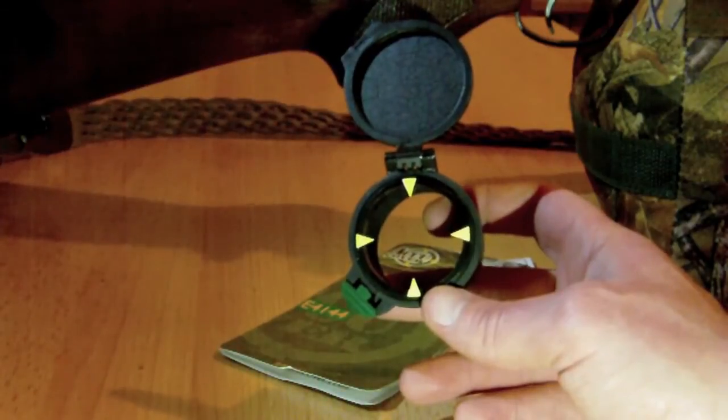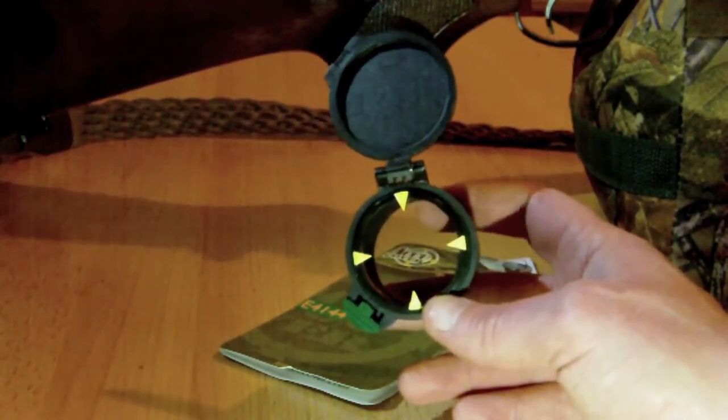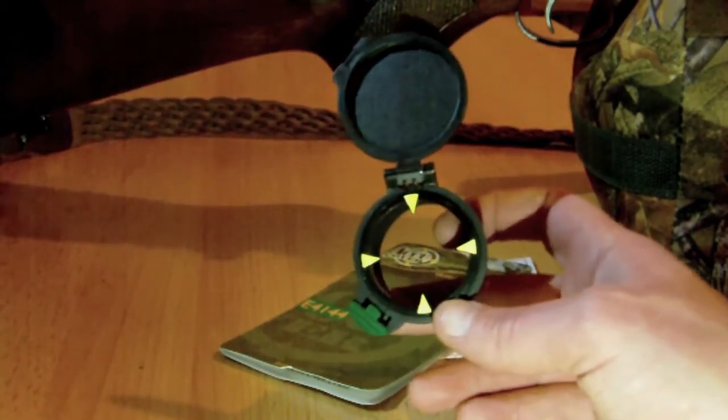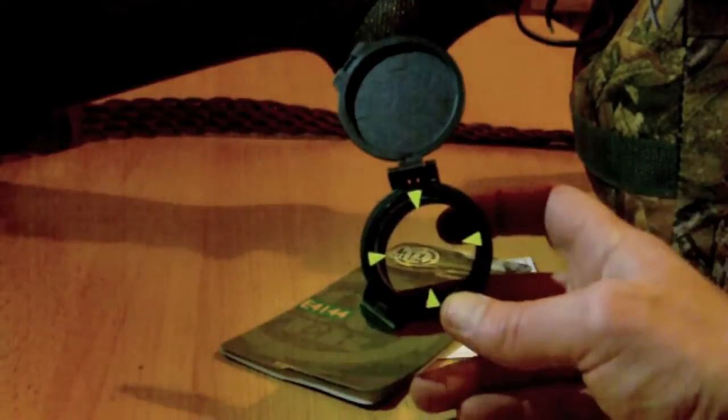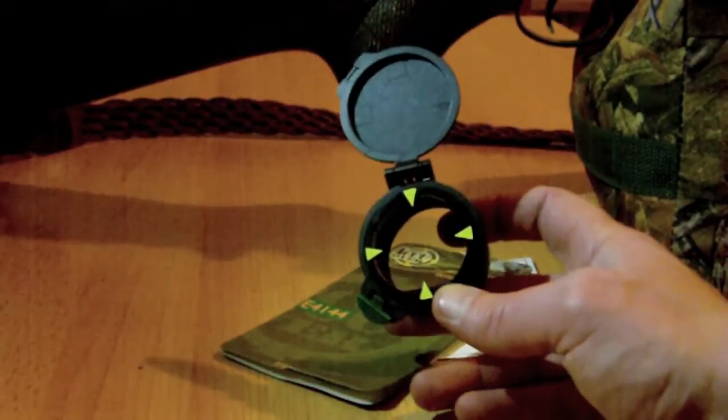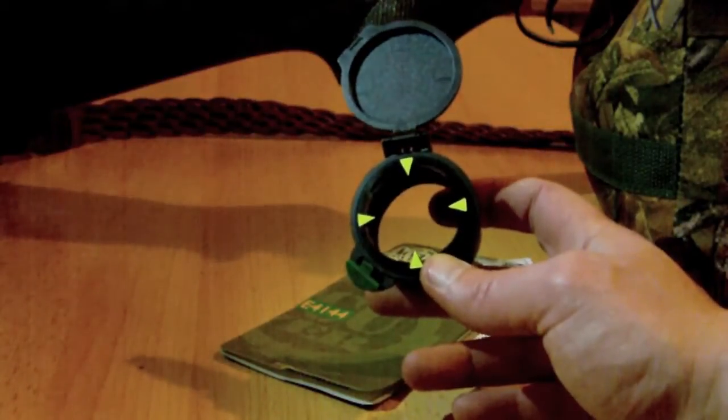When you look down the scope it stops you getting what's known as cant and parallax errors. Parallax being when you look down the scope, if your eye isn't exactly in the middle, your sight will be off and where you think you're aiming isn't where it's actually aiming.